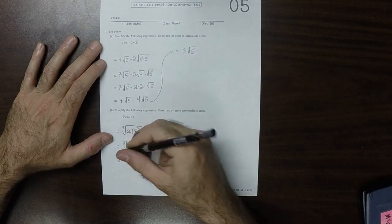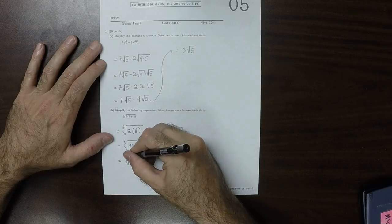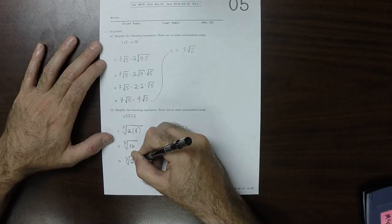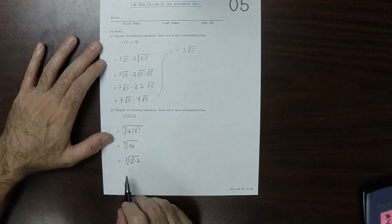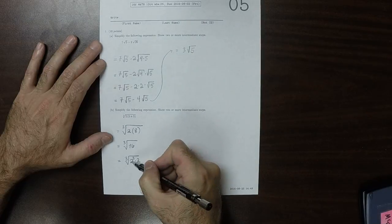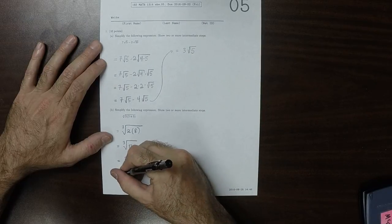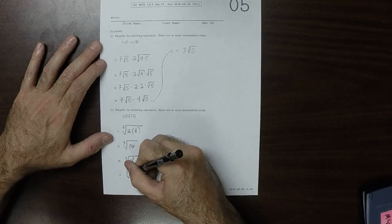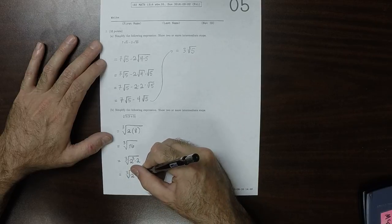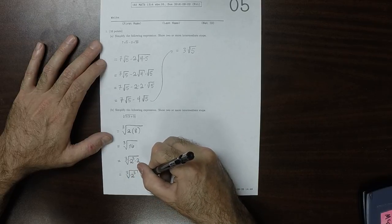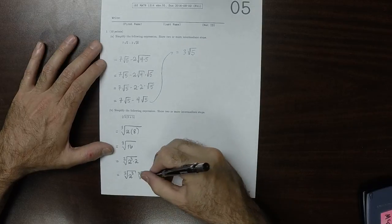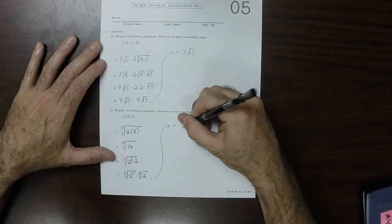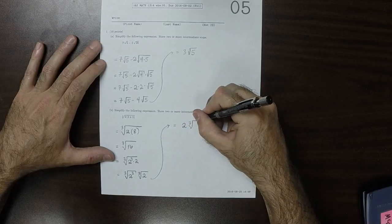16 is 2 cubed times 2, which is to say exactly this. So this cube root of 2 cubed times the cube root of 2. The cube root of 2 cubed is 2. So this would be 2 cube root of 2.